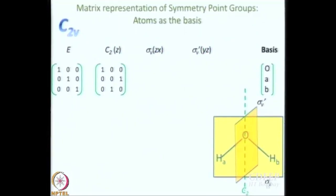What about sigma ZX? Sigma ZX should have the same matrix as E — the same 1 0 0 / 0 1 0 / 0 0 1. What about sigma V' (YZ)? Same: O remains the same, and A and B interchange, so the matrix will actually be the same as C2.